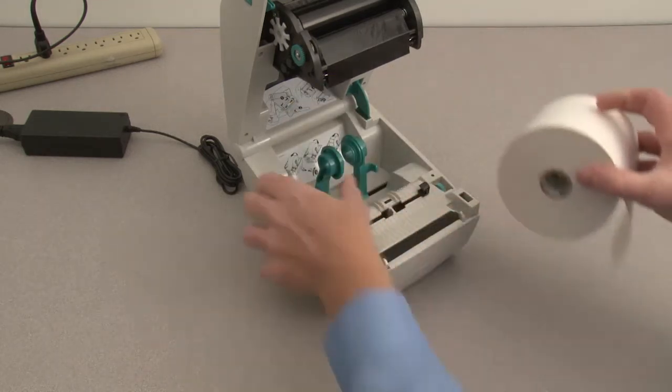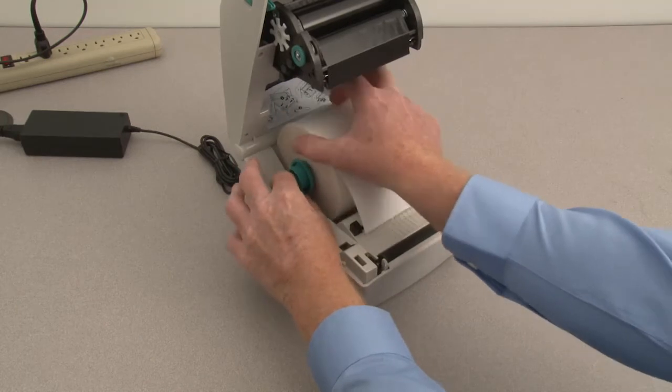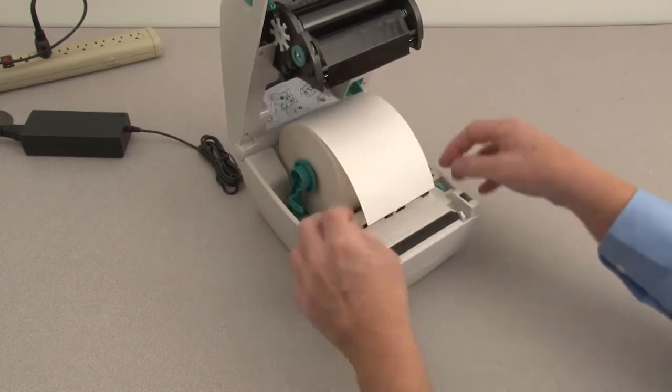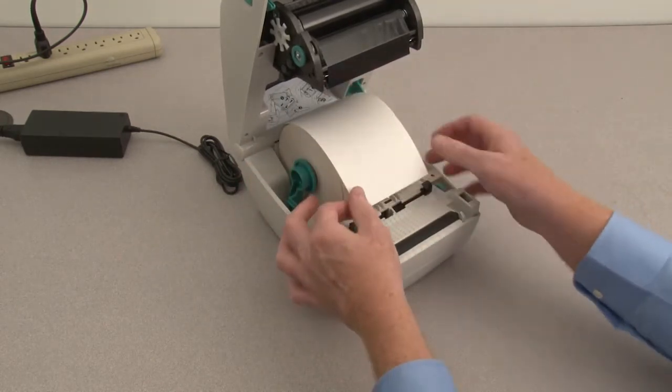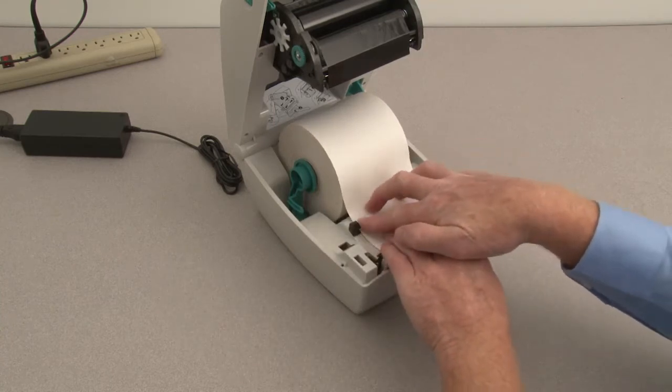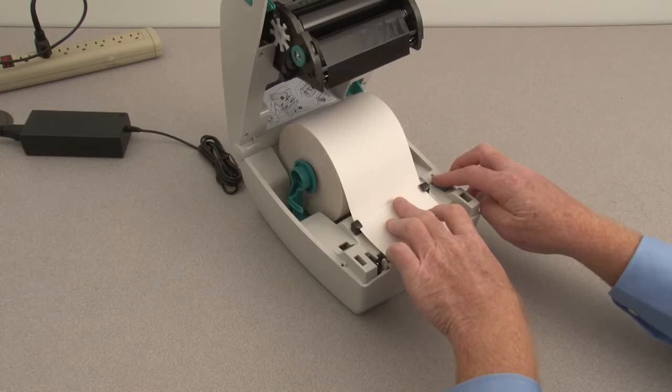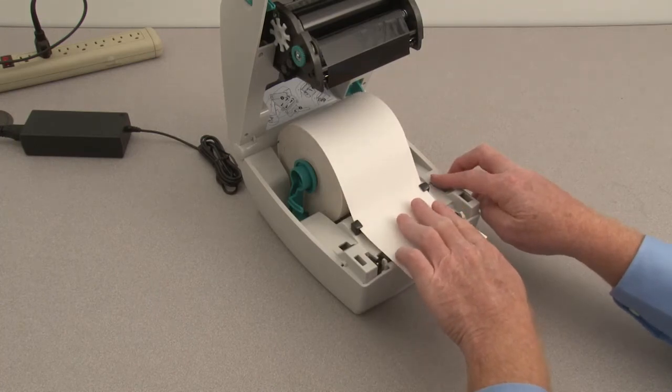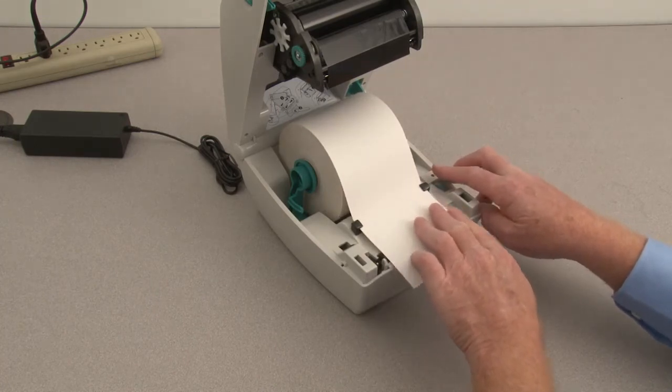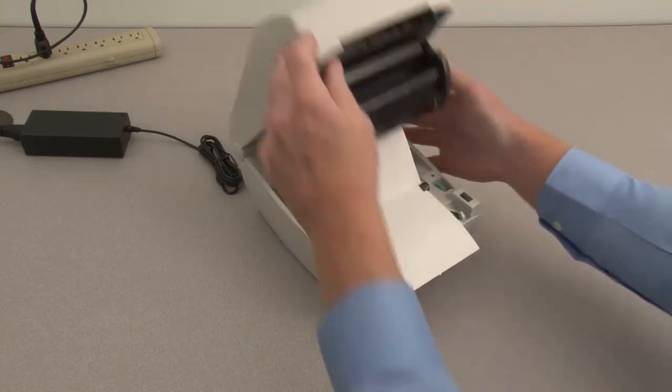Place the supply media in the roll holders. Position the media between the guides and out the front of the printer. Adjust the guides so they just touch the edge of the media. Close the printer.